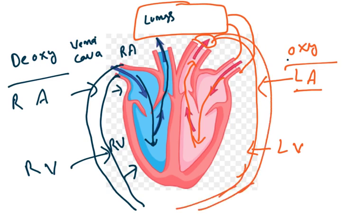Again all the parts of our body utilize blood, and again it becomes deoxygenated. Again deoxygenated blood is carried to right atria — the cycle continues. This is what we typically call the cardiac cycle. This block diagram briefly explains how the blood circulation occurs.